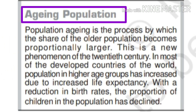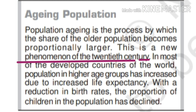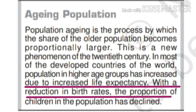Aging population. Aging is the process by which the share of the older population becomes proportionally larger. This is a new phenomenon of the 20th century. In most of the developed countries of the world, population in higher age groups has increased due to increased life expectancy. With a reduction in birth rates, the proportion of children in the population has declined.